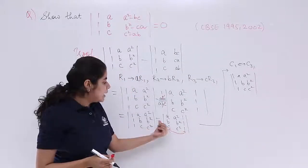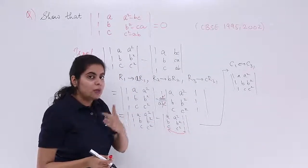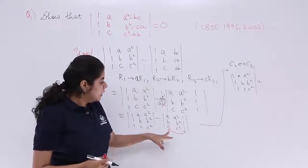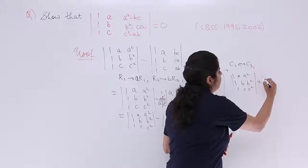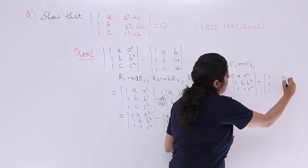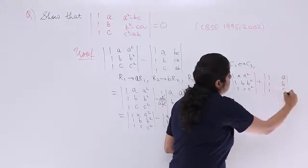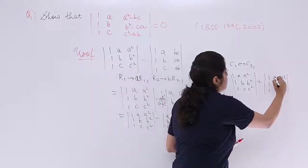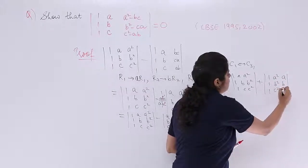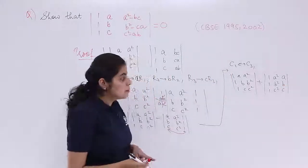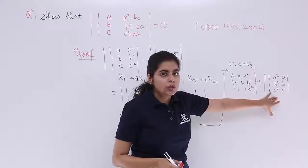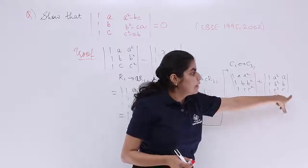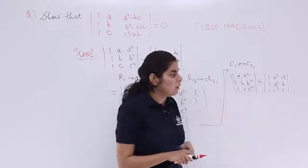Interchange will give me 1, 1, 1 here, A, B, C here in the third column, and A square, B square, C square here. But still, are these same? No, they are not. Why? Because A square, B square, C square is needed otherwise in the third column. So, let's again interchange these two. When you interchange, you apply basically C2 interchange with C3, and one interchange will give me one negative sign.